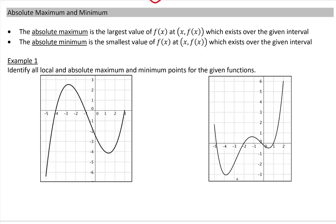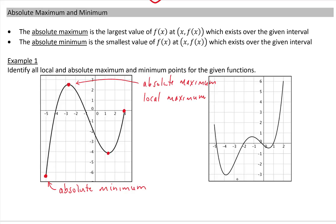Example one: identify all local and absolute max and min points for the given functions. Starting with the first point on the far left — this is the absolute minimum, the point with the lowest y value. Next, we have an absolute maximum — it is the point that contains the largest y value. This point is also called the local maximum, since at that point we go from increasing to decreasing. Next, we have a local minimum, since the curve changes from decreasing to increasing, and it's not the lowest point so it's not an absolute minimum.